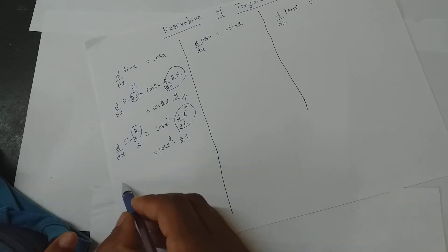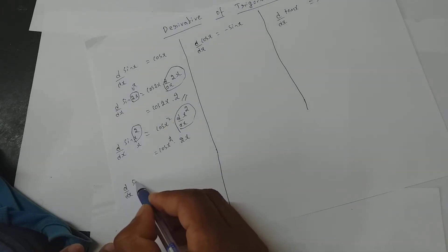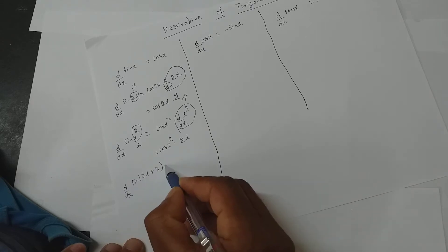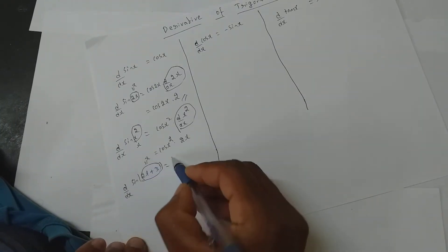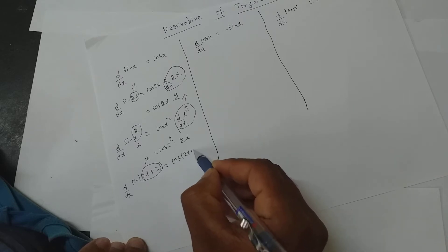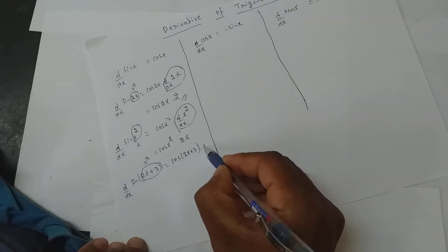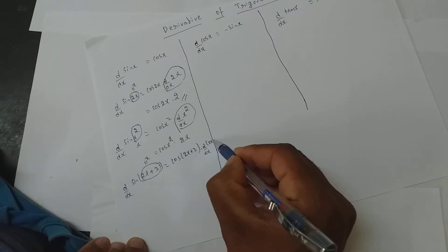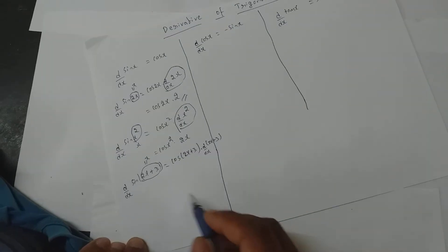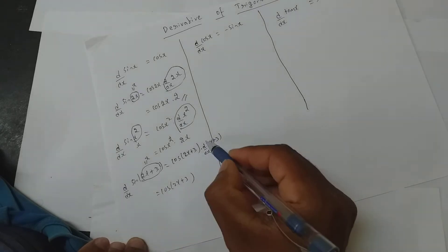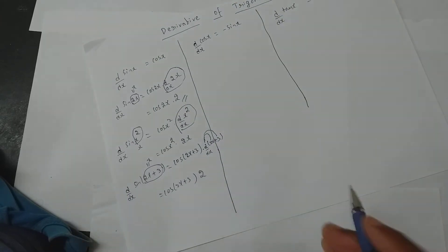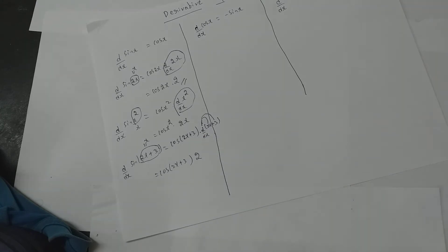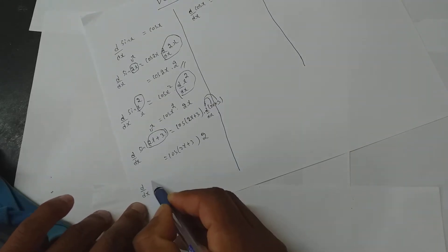Now if it is d/dx of sine of 2x plus 3 — again, sine derivative is cos x. I assume this entire part to be x, so it becomes cos of 2x plus 3, into d/dx of whatever you assumed. So it is cos of 2x plus 3 into d/dx applied to 2x and also to 3. When applied on 2x I get 2; when applied on 3 I get 0, so I don't write that.